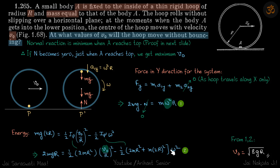We now have two equations and two unknowns — omega and v₀. Solving these two equations gives the answer: v₀ should be √(8gR). Now let us see the proof that the normal reaction is minimum when A reaches the top.